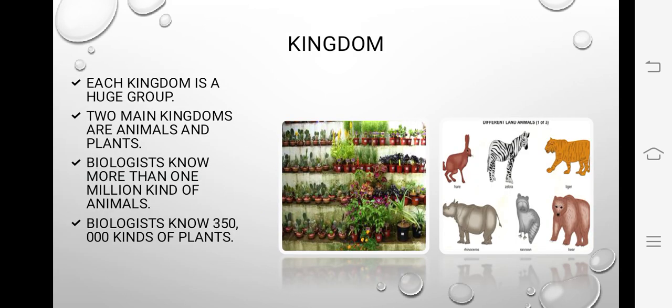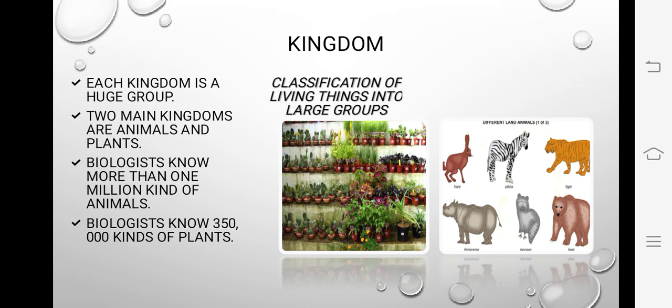Kingdom: classification is done by placing living things into kingdoms. Each kingdom is a huge group. The two main kingdoms are animals and plants. We make large groups — for example, animals like giraffe, lion, and tiger are grouped together so we can study and discuss their features more easily. Classification of living things into large groups is what we call a kingdom.